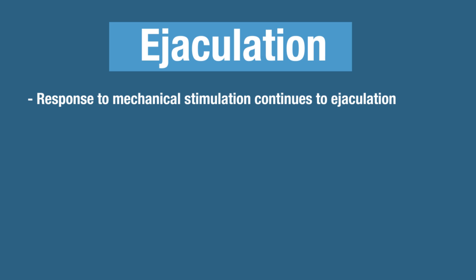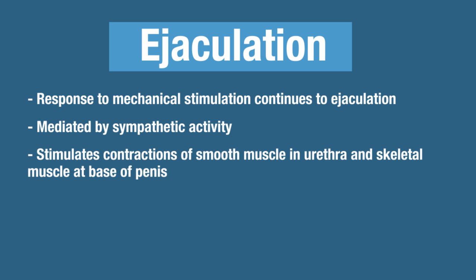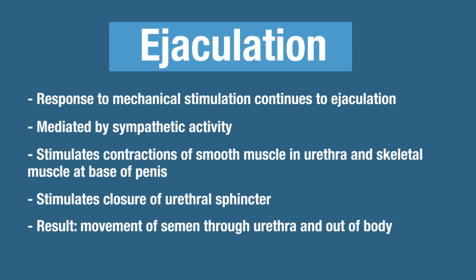This phase is followed by ejaculation. Mechanical stimulation is still occurring and is still mediated by the sympathetic nervous system. The result of emission was moving semen into the urethra, and once that happens, it stimulates ejaculation. Ejaculation involves contractions of the smooth muscle in the urethra and the skeletal muscle at the base of the penis. It also stimulates closure of the urethral sphincter so that urine and semen do not mix. The end result of ejaculation is to move semen from the urethra to the outside of the body.